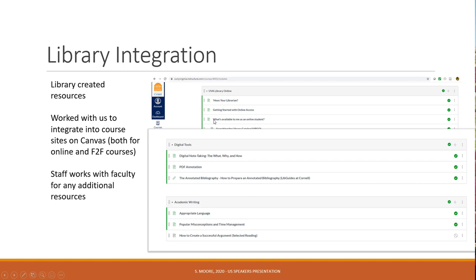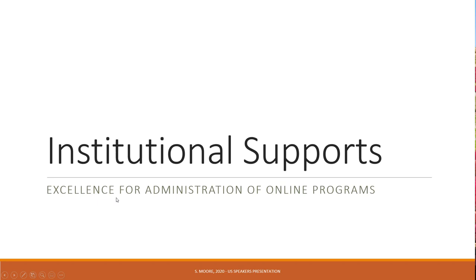Here's additional detail that our librarians created. I think librarians are some of the best collaborators and partners in developing effective online learning, and the more you integrate access to library resources and library supports, the more effective it is for online learners. This example shows additional resources on digital tools to use for note-taking, PDF annotation, and academic writing. Librarians are a wonderful resource to connect with to help flesh things out. Let's look a bit more at institutional supports and excellence for administration of online programs.